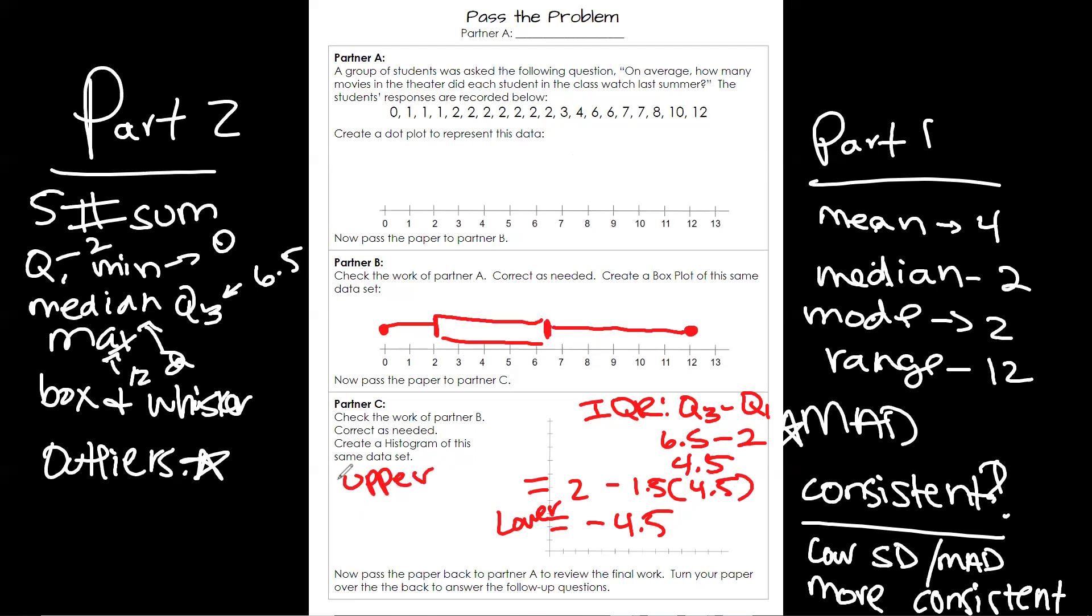For my upper fence, I'm going to use my Q3, which is 6.5 plus 1.5 times my IQR, which was 4.5. I'm going to type that in and tell me what you got. We okay on that? What this is saying is that at negative 4.5, so that's like out here, and 13.25, that's here, are there any numbers that are outside of it? Any numbers from up here that are outside of it? No. But we have no outliers. Sometimes you'll have them. Sometimes you won't.